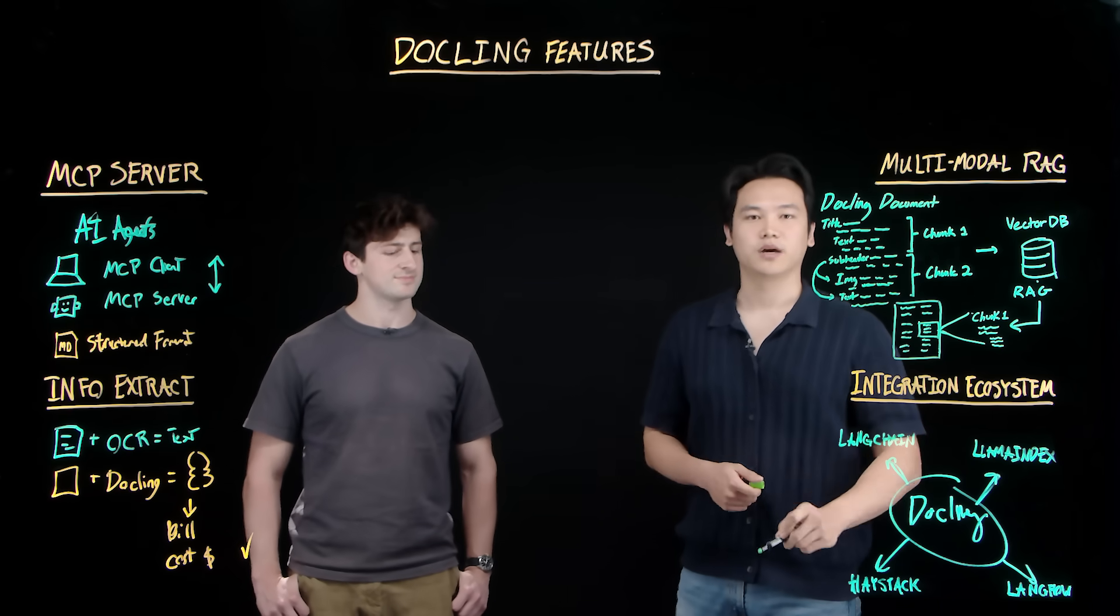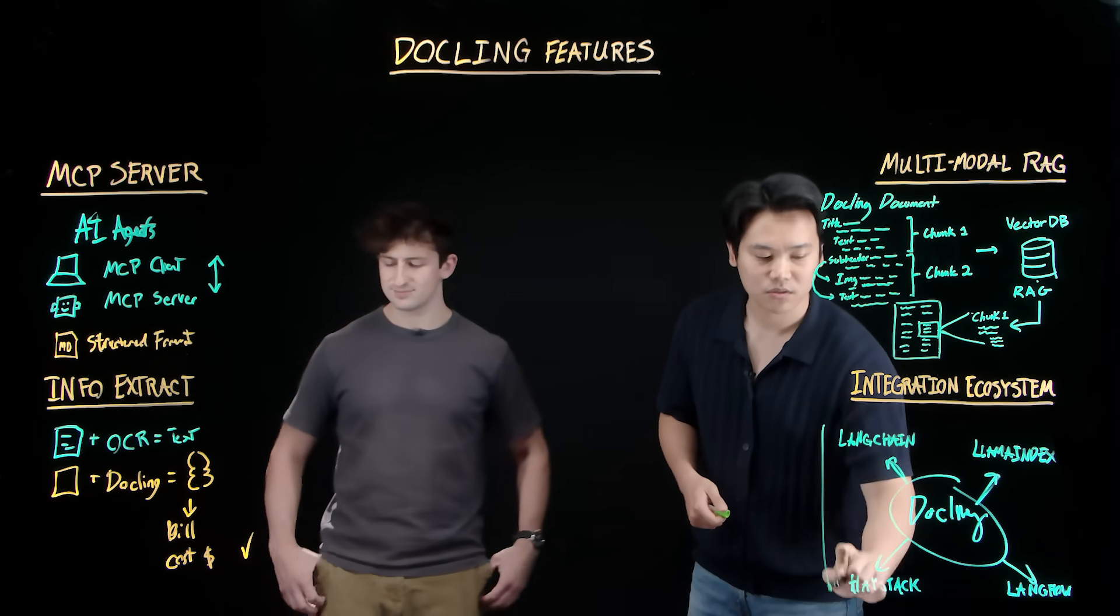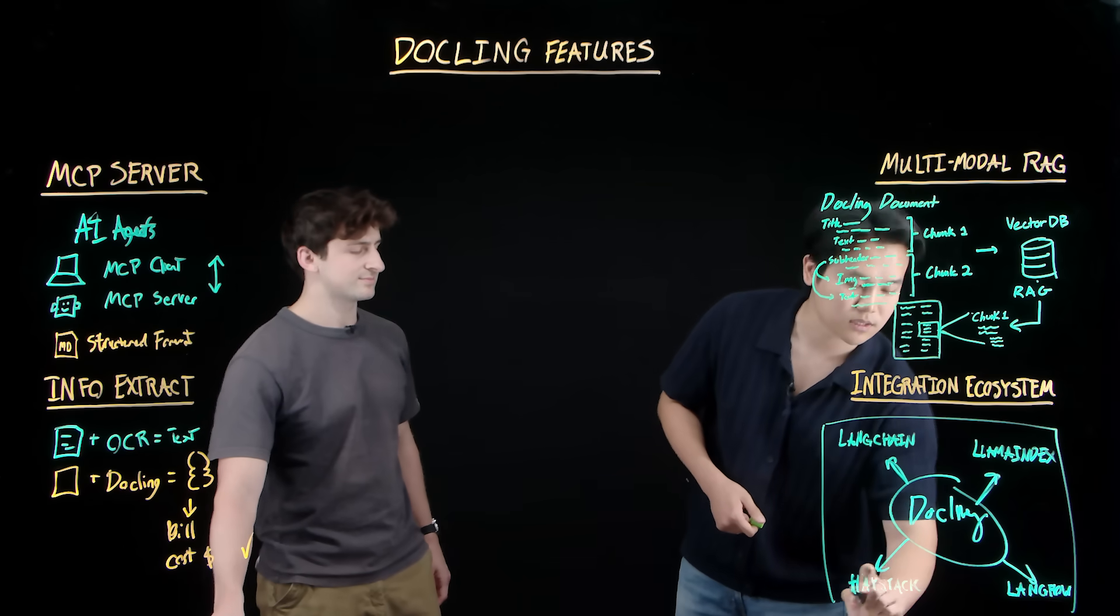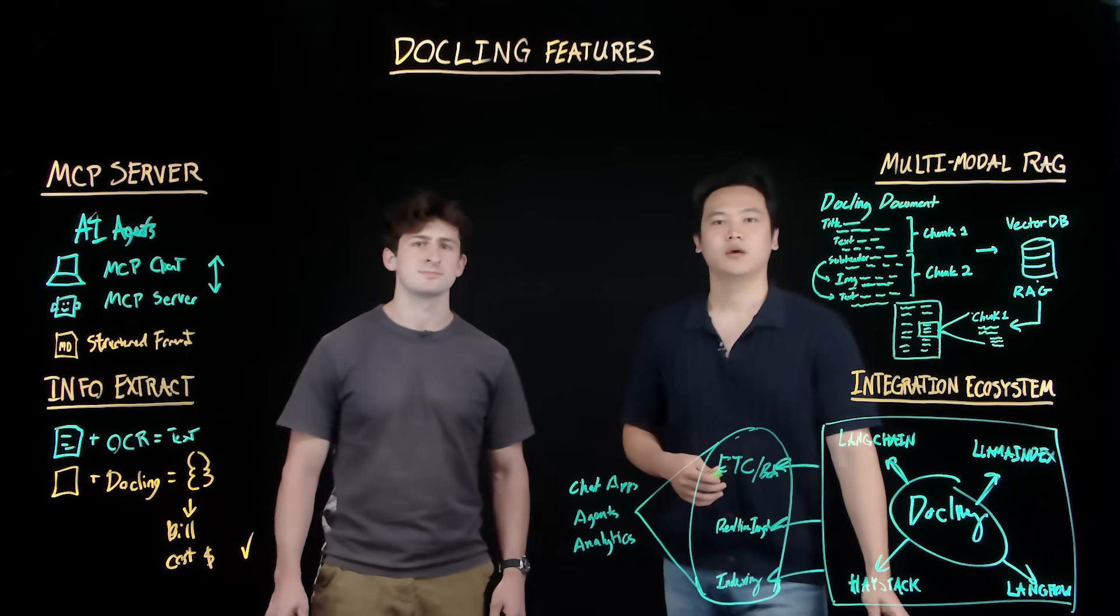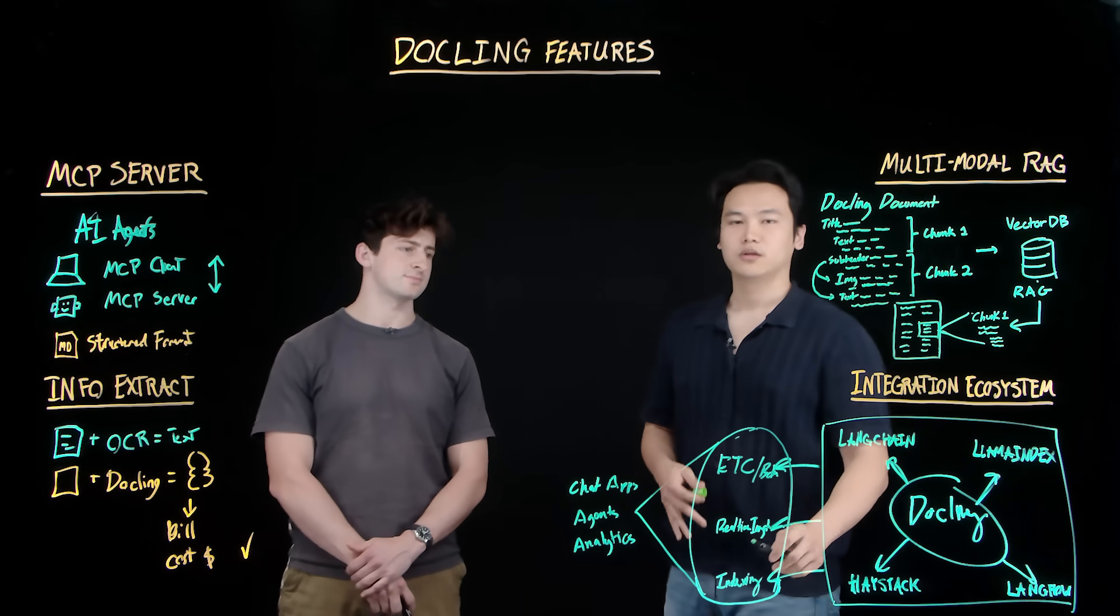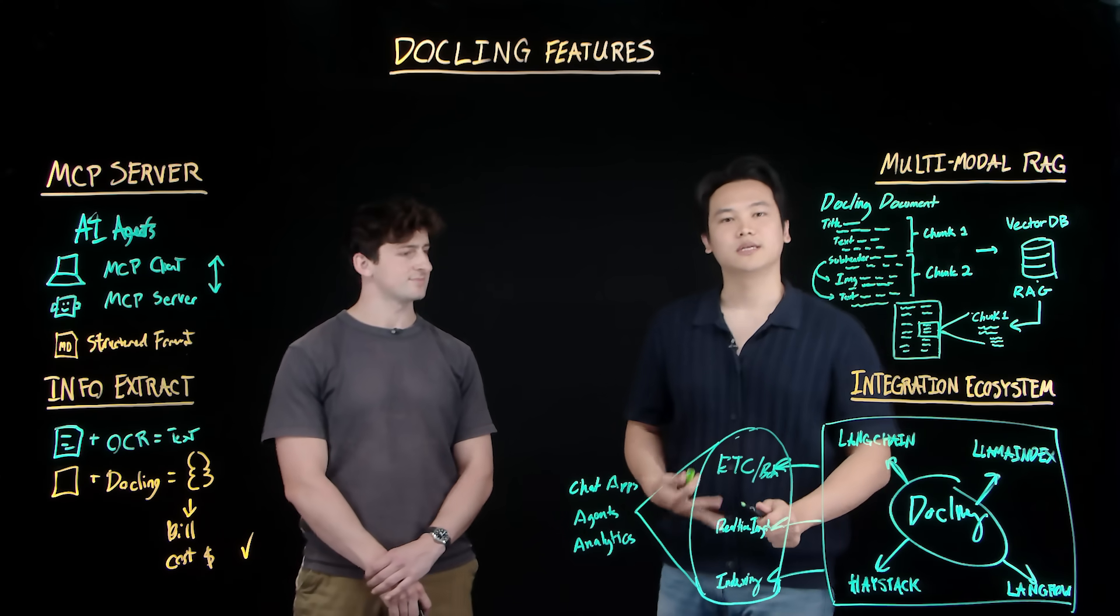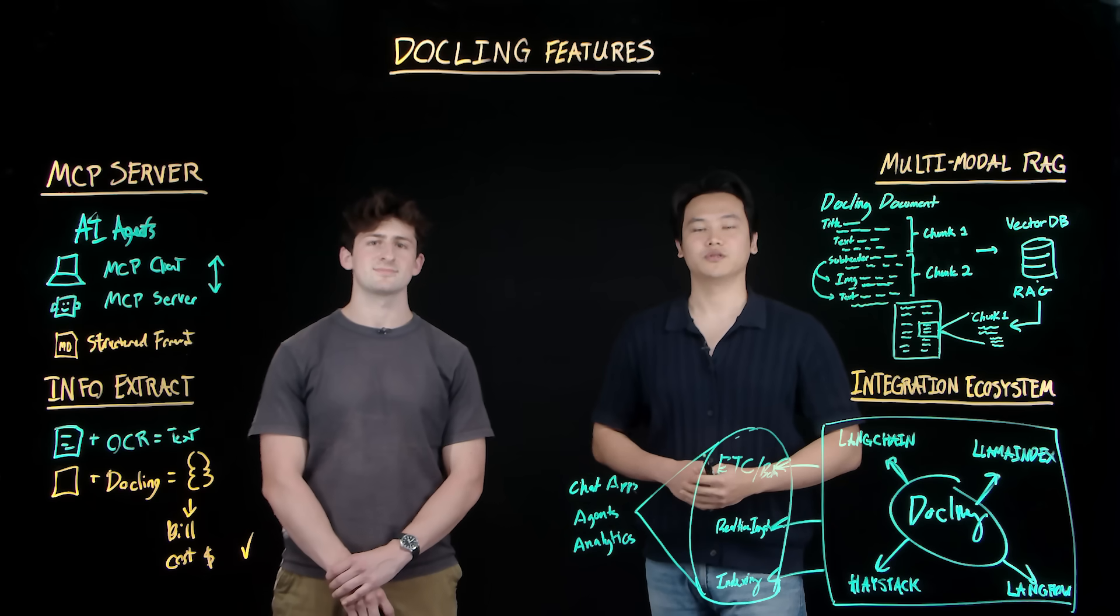Up a layer, teams wire Dockling into data pipelines, automation, batch, or real-time data processing pipelines. At the edge, you can ship product, chat apps, agents, and analytics. Dockling stays the same. Everything else is a configuration choice.